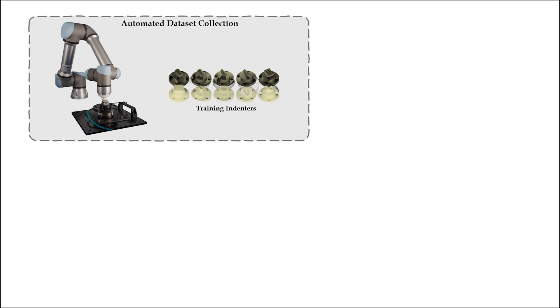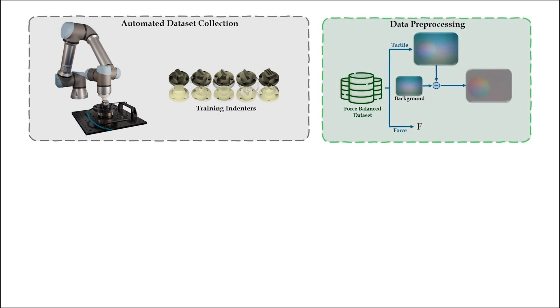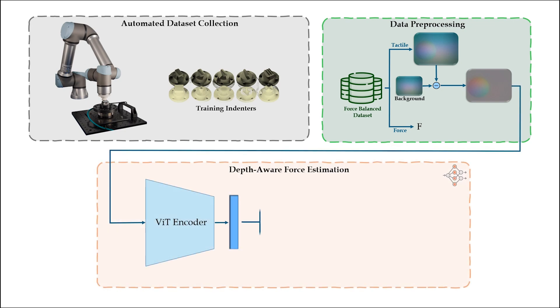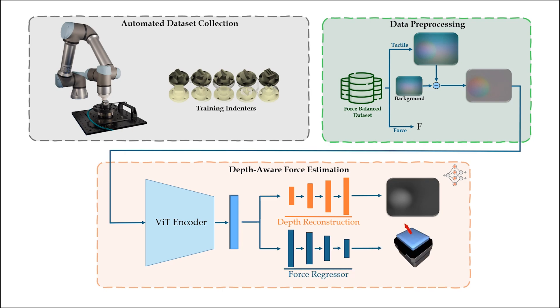After data collection, we subtract the tactile images from the sensor-specific background image to mitigate sensor manufacturing biases. The processed tactile images are then fed into a vision transformer, which learns a force-dependent representation to optimize a depth-aware loss function.